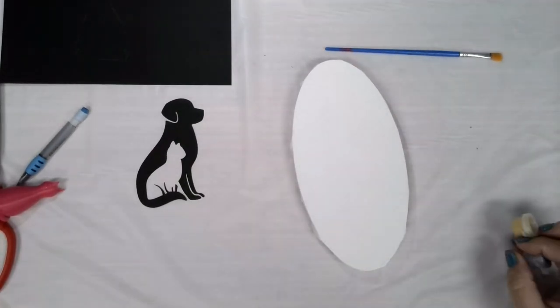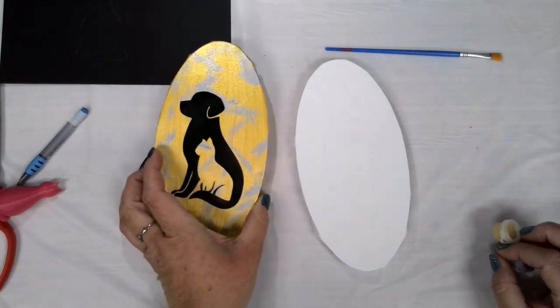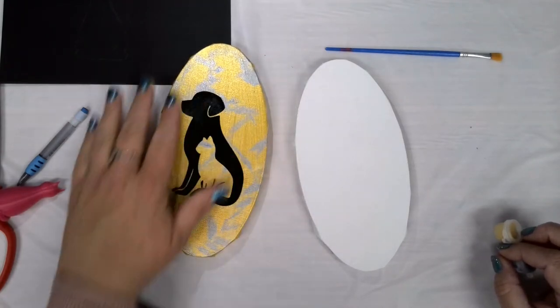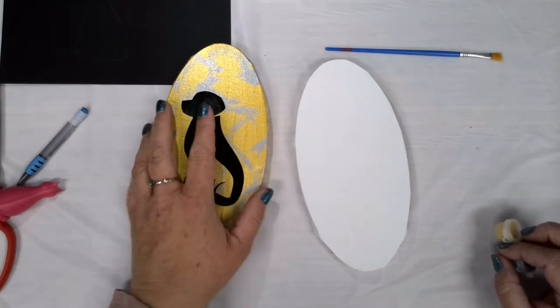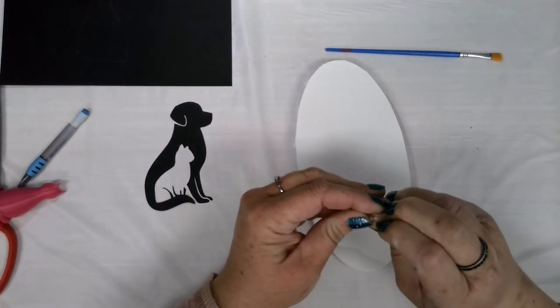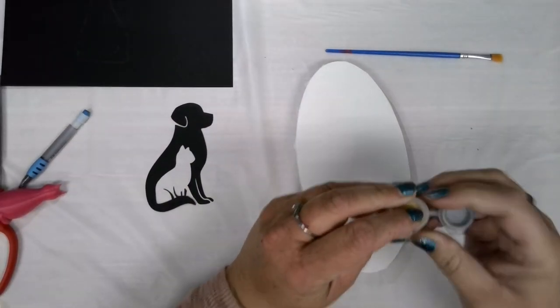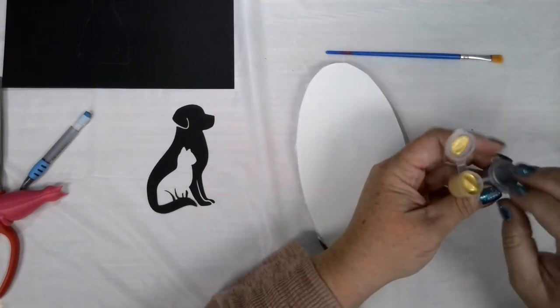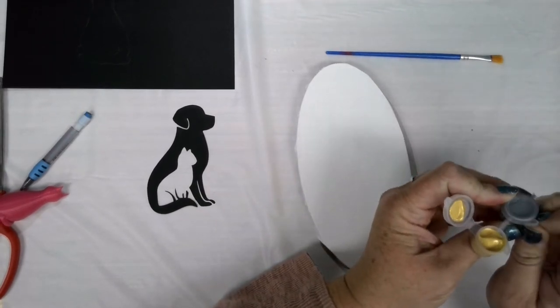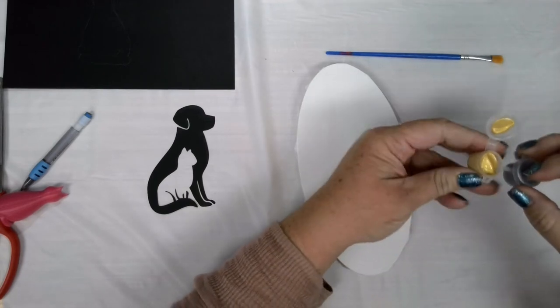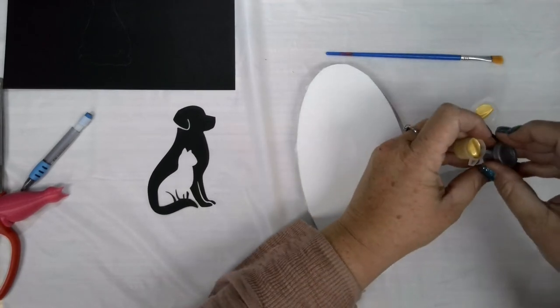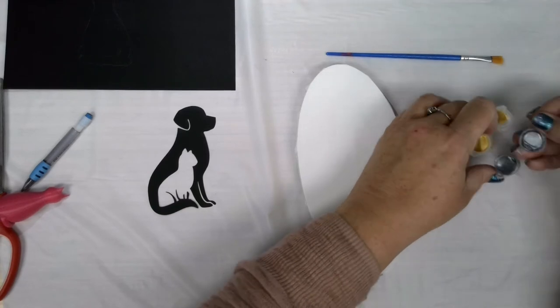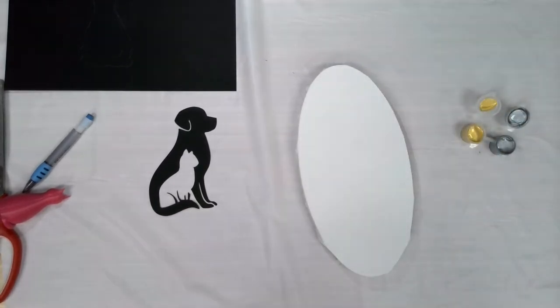So on my initial example I went with a main color of gold with some silver accents. Again this is the fun creative part of this project so you can really paint this however you prefer. I'm just going to gently open those cups of paint. Some of them are a little fuller than others. Here we go I've got my colors.